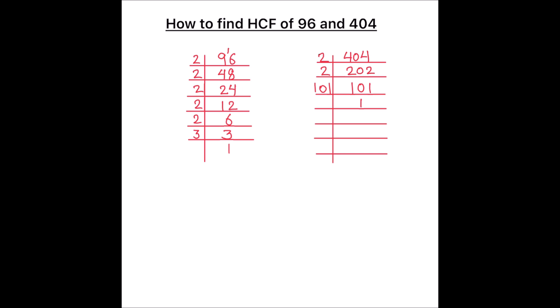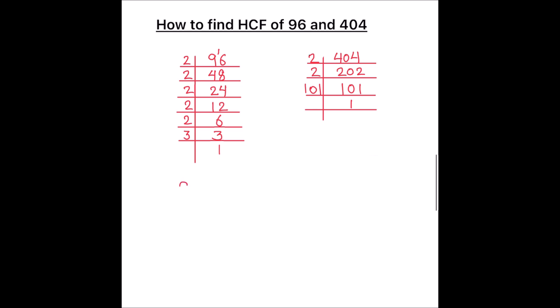So we got the factors of 404 and 96. Now we will find the HCF of the two numbers. The factors of 96 are 2 × 2 × 2 × 2 × 2 × 2 × 3 × 1, and the factors of 404 are 2 × 2 × 101 × 1.